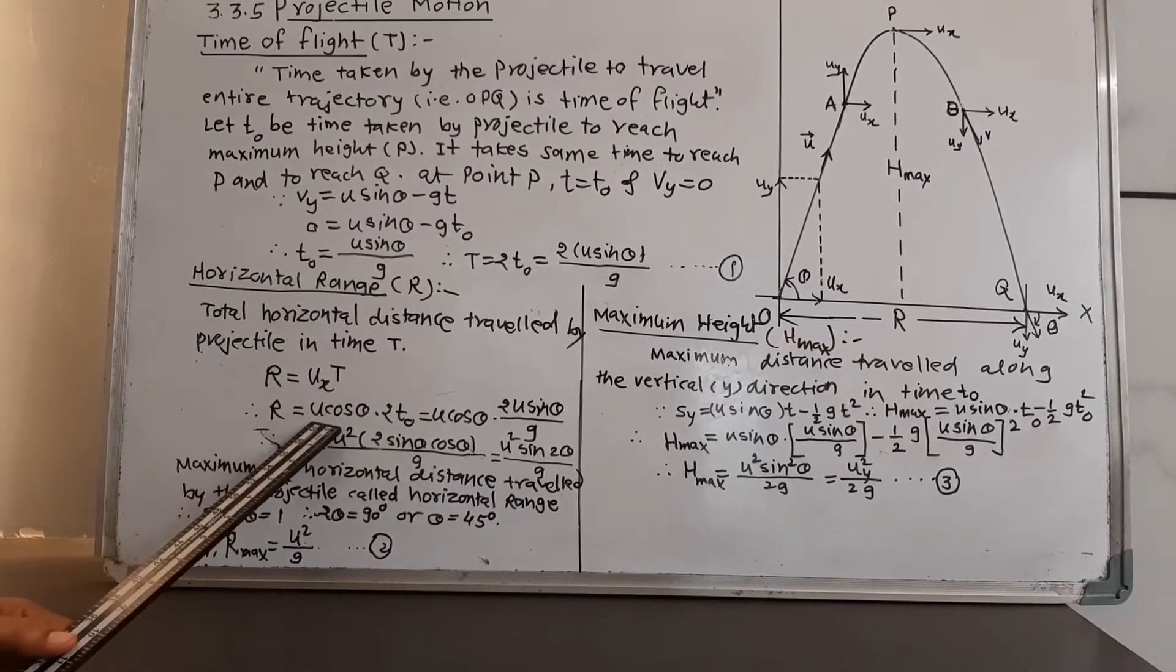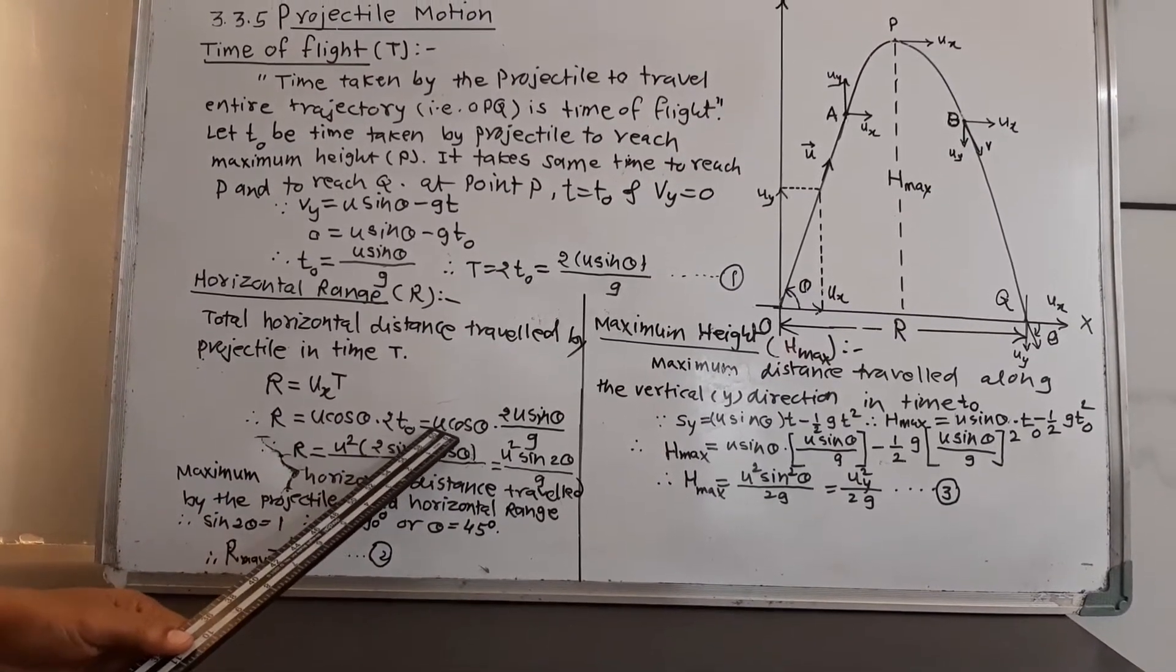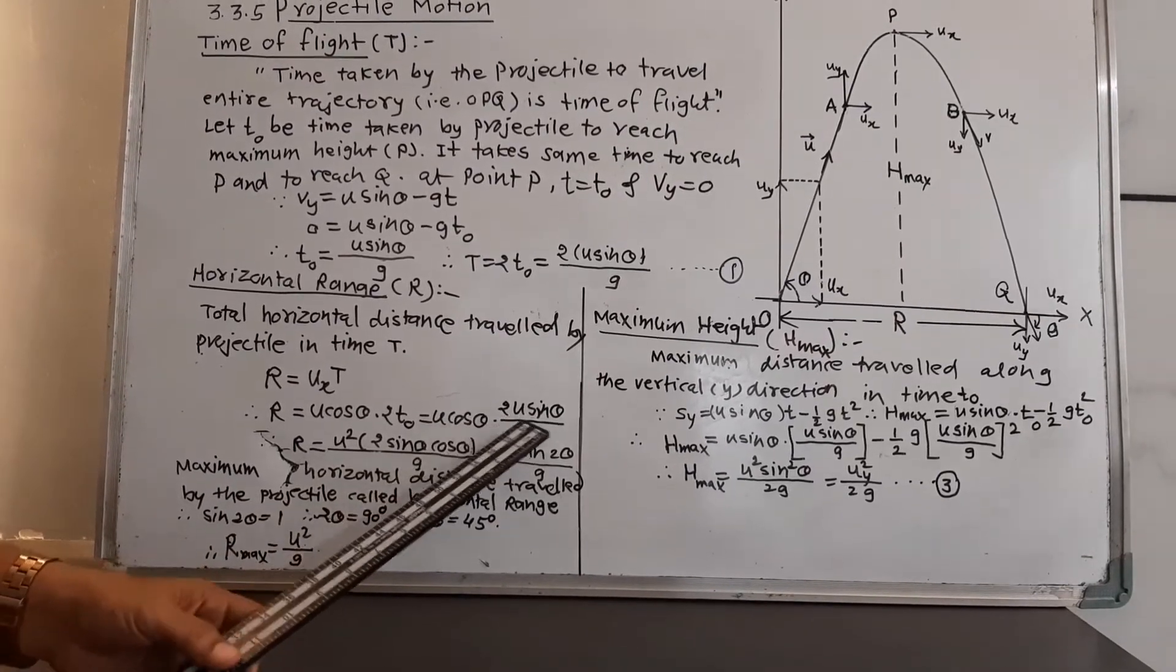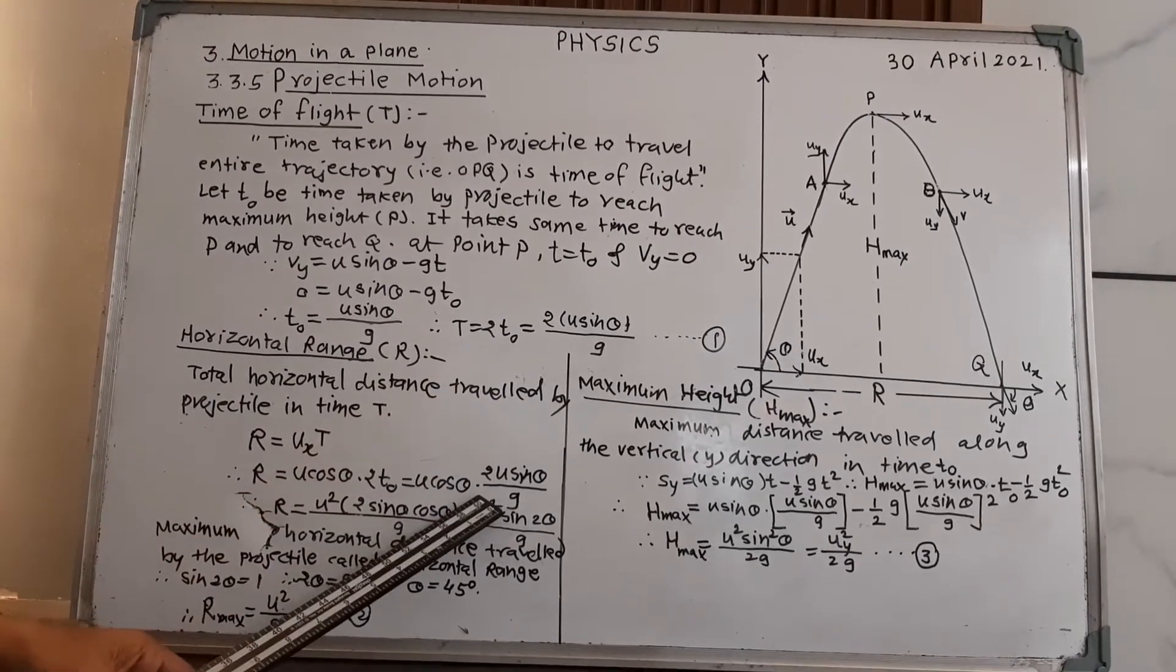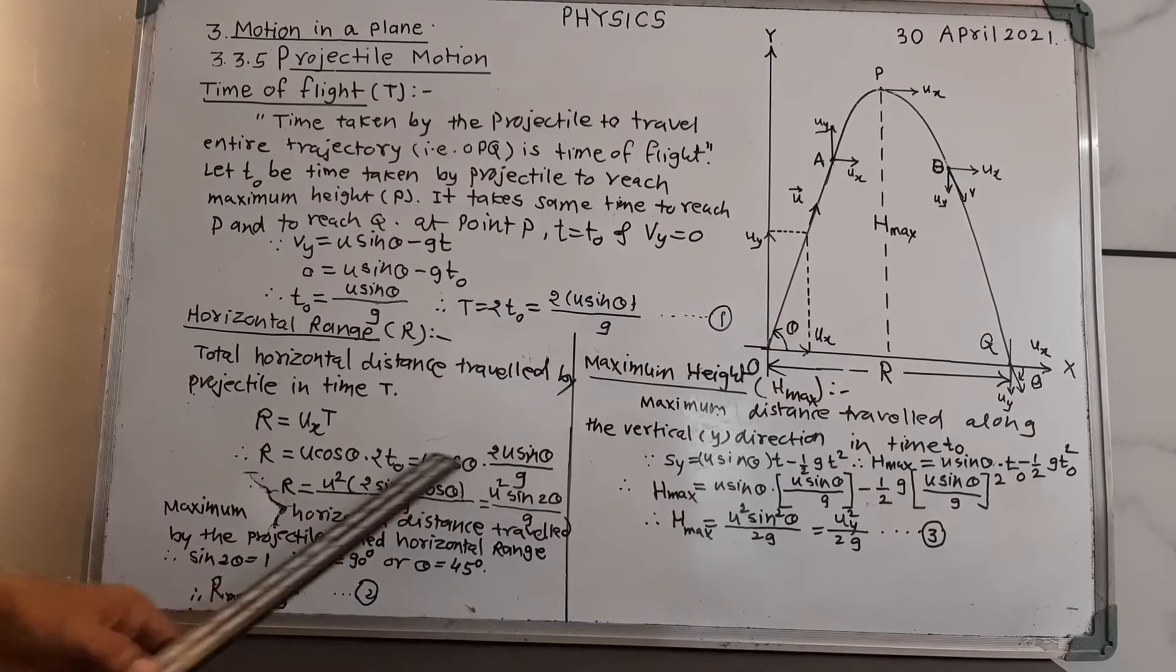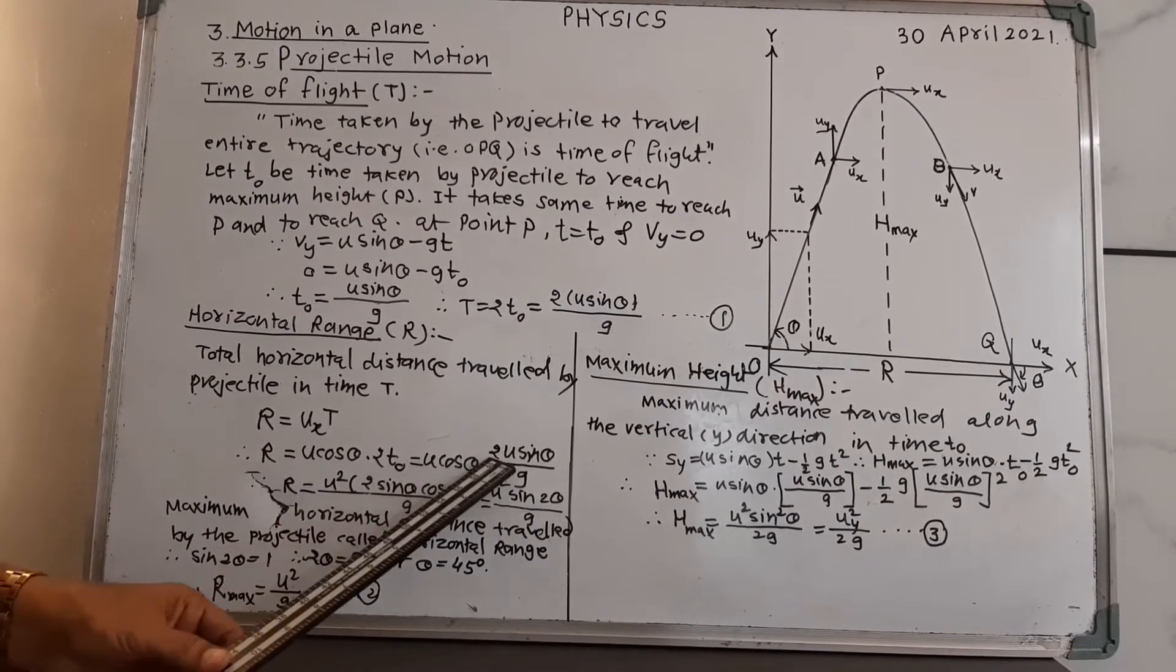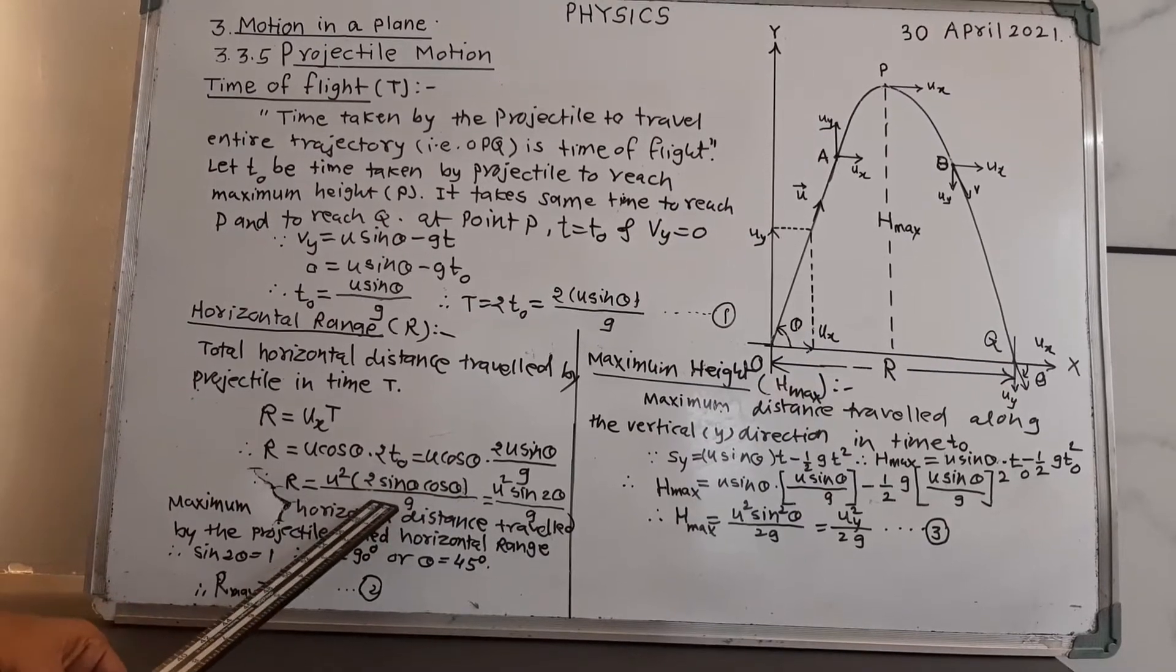R will be U cos theta into twice T0 which is U cos theta into twice U sin theta upon G. The value of capital T substituted from equation number 1 here. If you simplify this, U into U will be U square and this 2 sin theta cos theta divided by G.